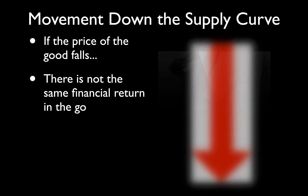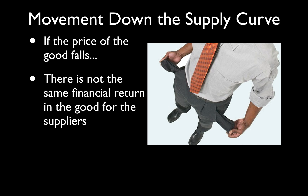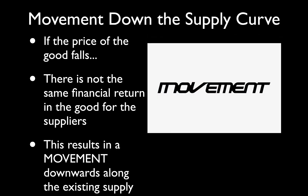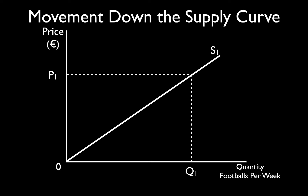If the price of the good falls, there is not the same financial return for suppliers. The profit margin per unit sold has been reduced, therefore the incentive to produce that good is also reduced. In economics, it all comes down to incentives. A reduction in the price of the good causes a movement downwards along the existing supply curve, reducing quantity supplied.